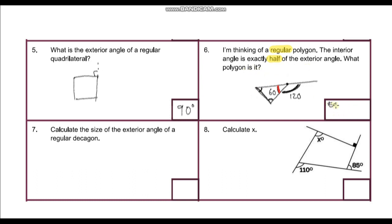If all interior angles are 60 degrees, this is an equilateral triangle — so the answer is an equilateral triangle.